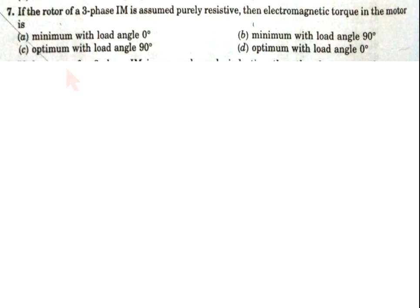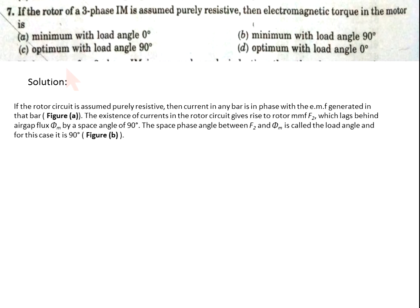Question 7: If the rotor of a three-phase induction motor is assumed purely resistive, then the electromagnetic torque in the motor is — option A: minimum with load angle 90°, option B: minimum with load angle 90°, option C: optimum with load angle 90°, option D: optimum with load angle zero.